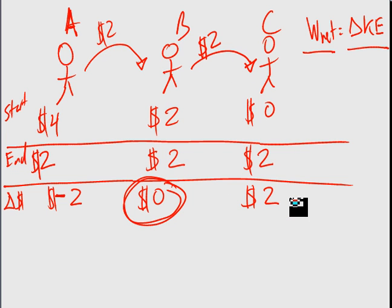For person C, positive work was done on C. Work makes them more wealthy, right? That means B gave $2 to C. And now if I said, C, we gave you $2, how much more money do you have than you did before? $2, right? Makes so much sense. And this is how to think about the work energy theorem in terms of this analogy. Bye-bye.